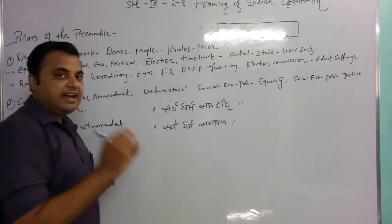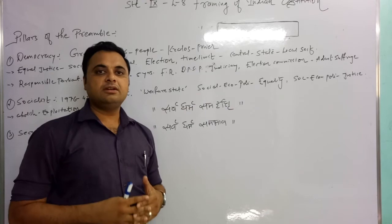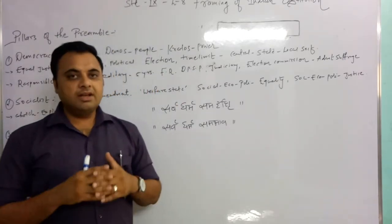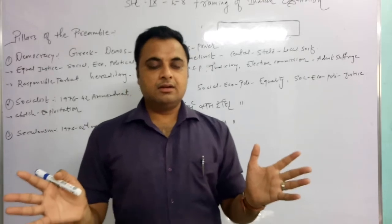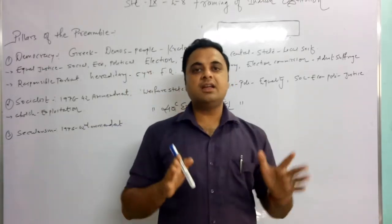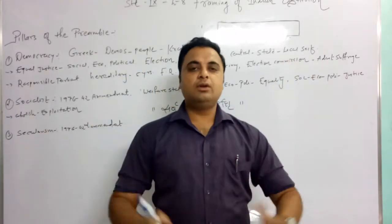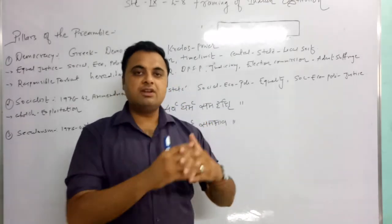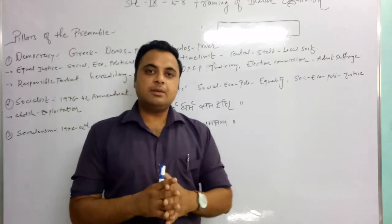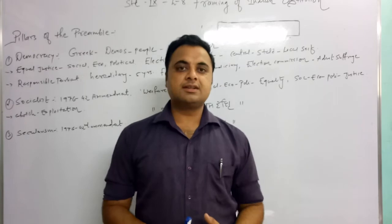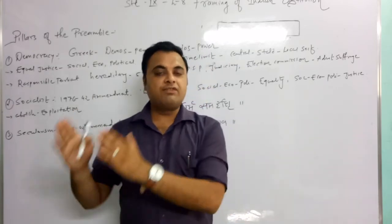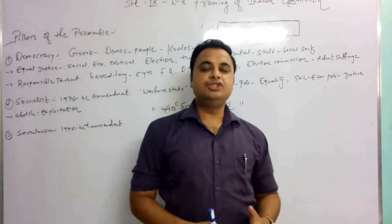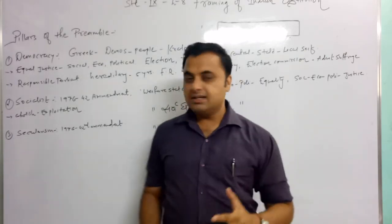Sarva dharma samadrashti means equal vision to all religions in our country. Sarva dharma samabha means equal status and equal respect to all religions. India is a multi-religious country - there are Hindus, Muslims, Sikhs, Christians, Parsis, Jains, Buddhists, and Jews. There are so many religions in our country. Our constitution gives equal status to all people and all religions. In matters of religion, the state does not interfere, and every citizen has the right to freedom of religion - the right to choose their own religion.